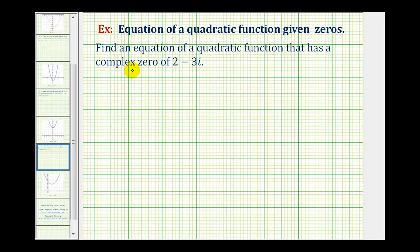In this video I'll show an alternative method for finding an equation of a quadratic function that has a given complex zero. In this example we're given that the quadratic function has a complex zero of 2 minus 3i.